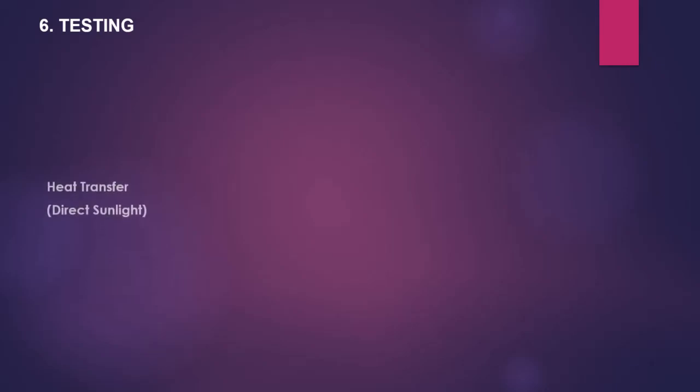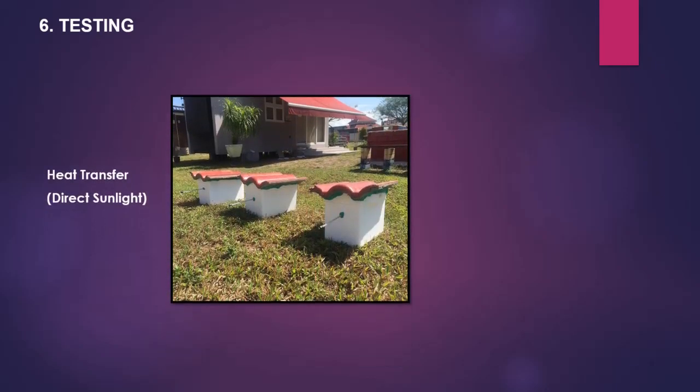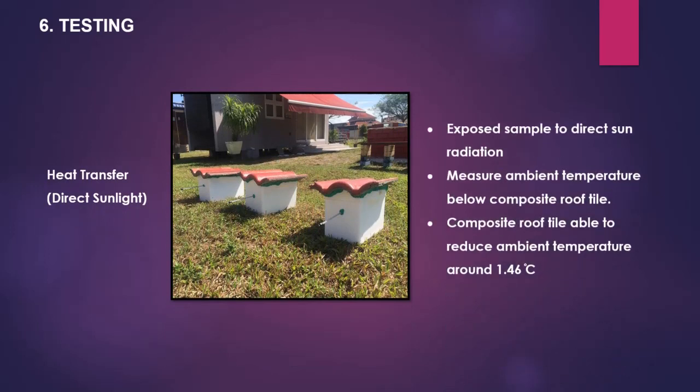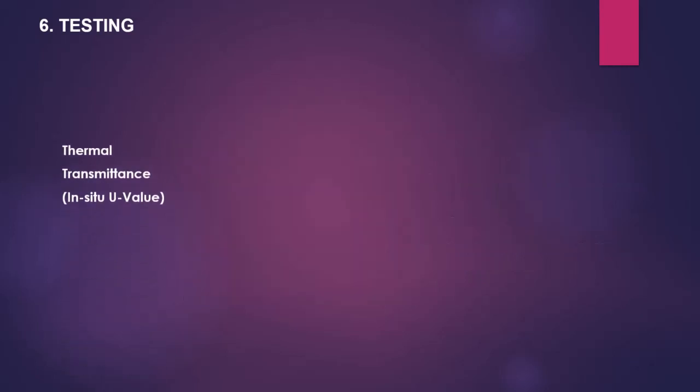Three tests were conducted for the composite roof tile. First, heat transfer by direct sunlight: the exposed sample was directly heated by solar radiation, and the ambient temperature below the composite roof tile was recorded. The composite roof tile was able to reduce ambient temperature by around 1.46 degrees Celsius.